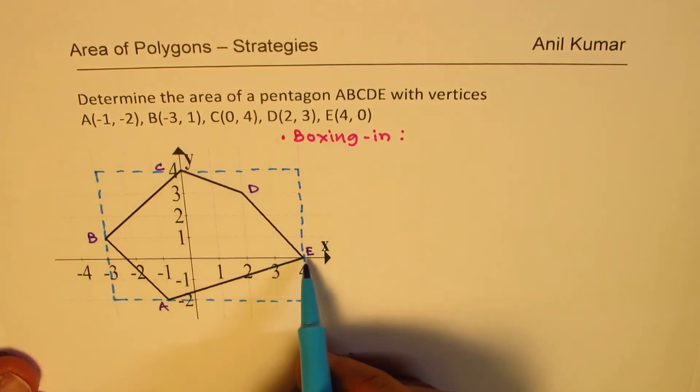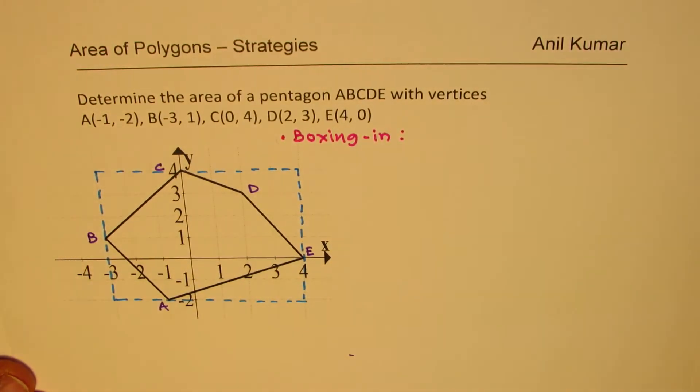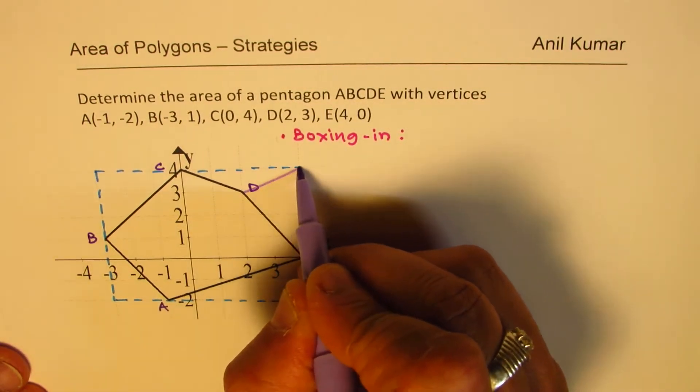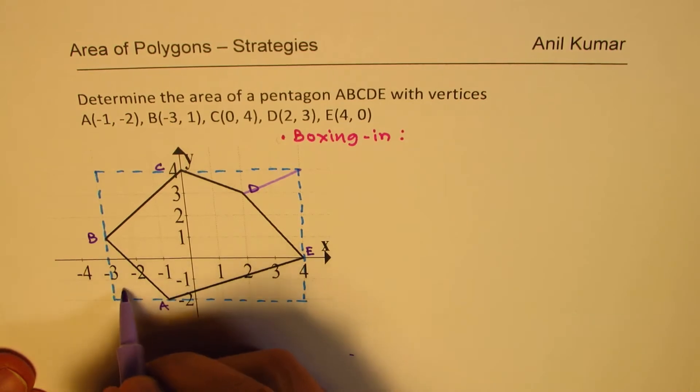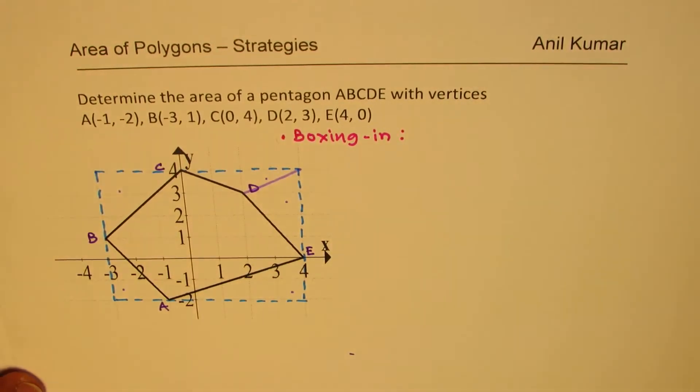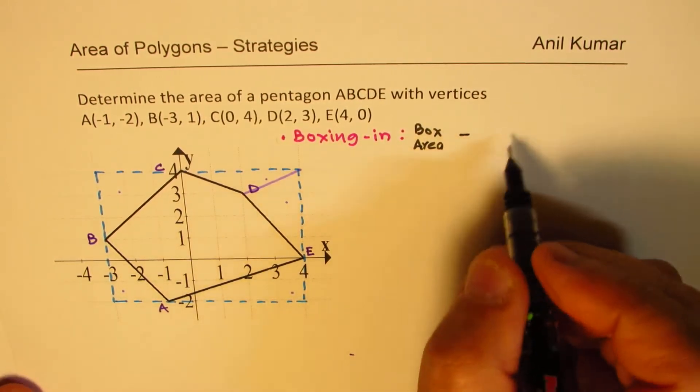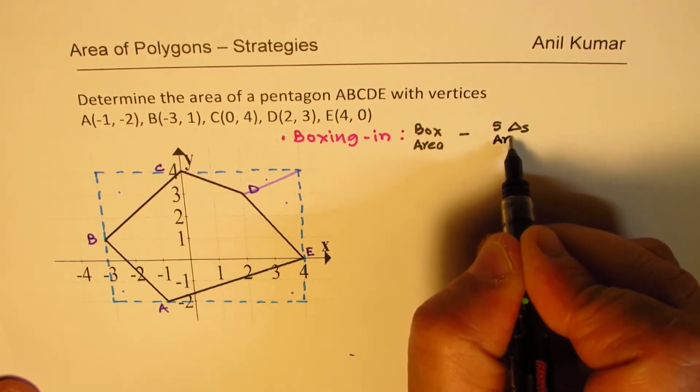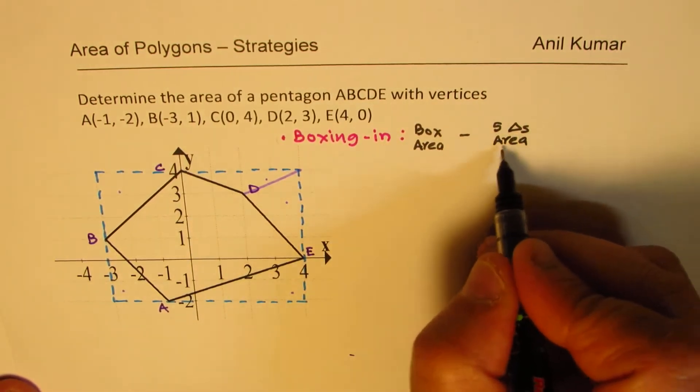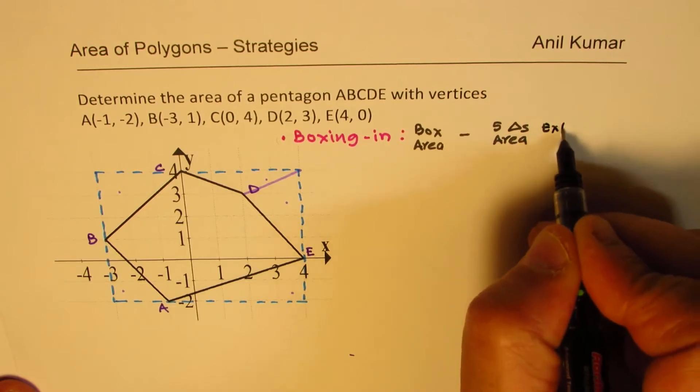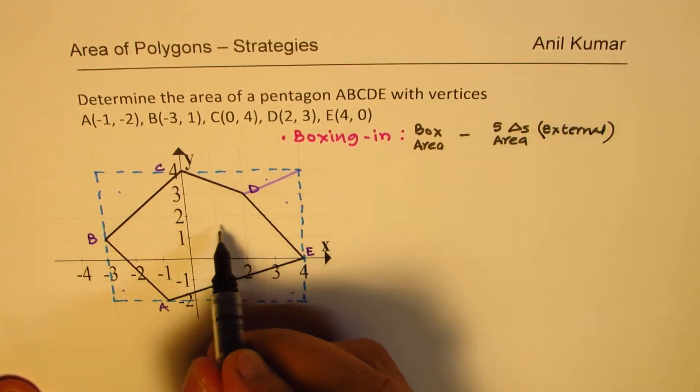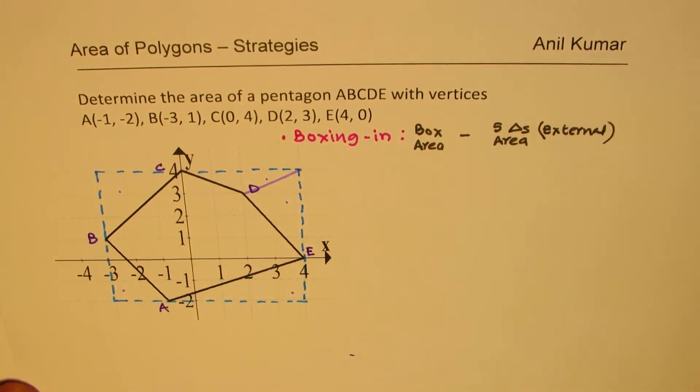Some vertices will be right there on the rectangle. Some could be inside, as you can see here. So the vertices A, B, C, and E are on the edge. D is not. However, we can connect D to the vertex, and then what you observe here is that we get five triangles. So to find the area of this pentagon, what we will do is we'll calculate the area of the box first. So we'll have box area, and from there, we'll take out five external triangles area. Since we are interested in internal area of this pentagon.